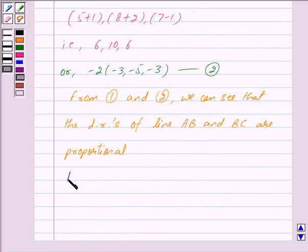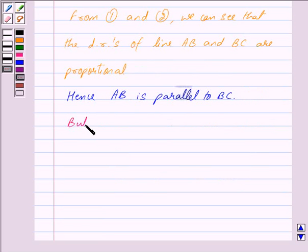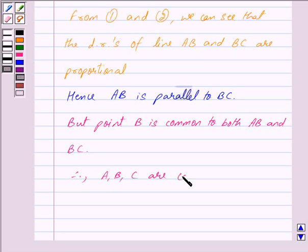Hence we have AB is parallel to BC. But point B is common to both AB and BC. Therefore, A, B, and C are collinear points.